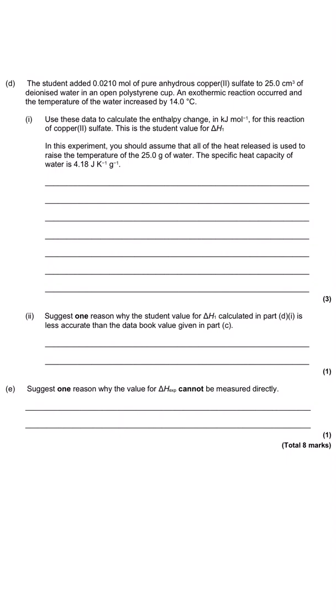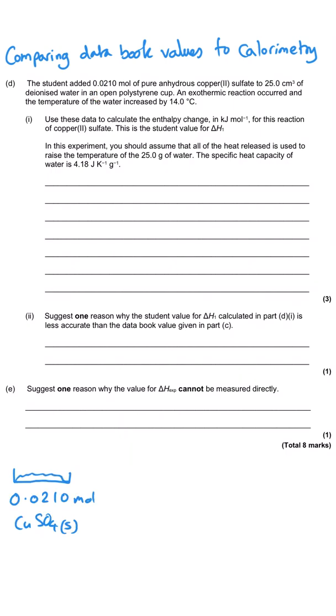As is often the case, this question moves on to a calorimetry question where we're doing something very similar using actual experimental data rather than data book values. A student is adding 0.210 moles of pure anhydrous copper sulfate - sometimes they get us to calculate the moles using mass over Mr, but they're just telling us the moles here. Anticipate how amounts of substance can get built into this required practical by having you calculate the moles. They're adding it to 25 cubic centimeters of deionized water in an open polystyrene cup, which sounds like a mistake - I think we should be having a lid, but we'll get back to that later. We're told that an exothermic reaction occurs, which we know because anhydrous copper sulfate was shown to be exothermic, and the temperature increased by 14 degrees Celsius.